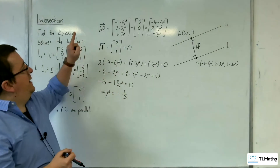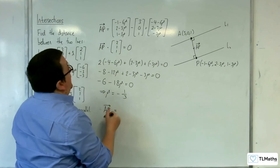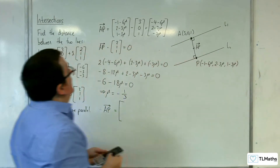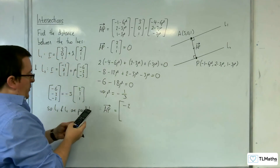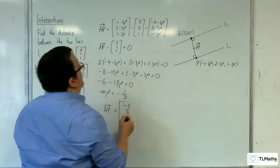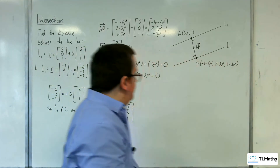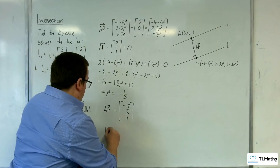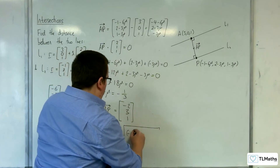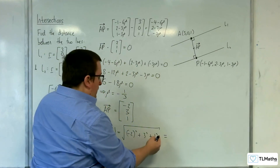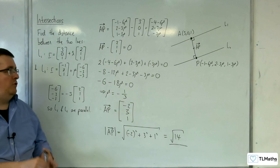Substituting mu equals minus 1 third back in gives the vector AP: minus 4 minus 6 times (minus 1 third) equals minus 2; 2 minus 3 times (minus 1 third) equals 3; and minus 3 times (minus 1 third) equals 1. So vector AP is (minus 2, 3, 1). The distance between the two lines is the magnitude of AP: the square root of (minus 2 squared plus 3 squared plus 1 squared) equals the square root of 4 plus 9 plus 1 equals root 14.